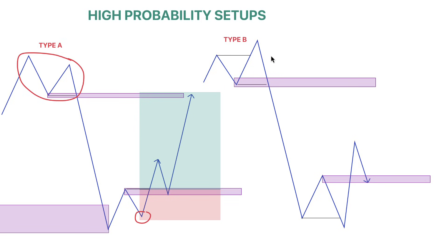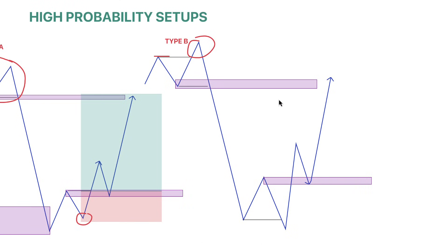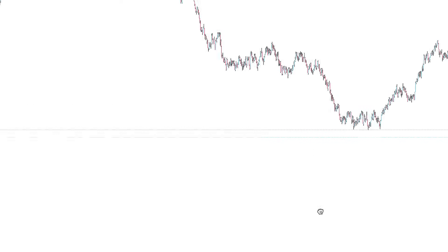The same thing applies to Type B. This one uses a breaker block instead. A breaker block normally clears liquidity above the previous high that was traded and then maybe trades into a key level before coming down. So it's the same concept — if I am going bullish, the presence of a bearish breaker block above makes this bullish breaker a high probability trade setup. Price comes back to my breaker block, and that makes it a high probability setup.